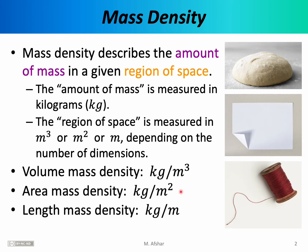So what this means is that there are really three different types of mass density. People sometimes forget to specify which type they're talking about, but if you look at the units they're using, you'll see what they mean. If you want to talk about the dough, you would talk about volume mass density, specified in kilograms per cubic meter. For a piece of paper, you talk about area mass density, specified in kilograms per square meter. For a string, you talk about length mass density, which is kilograms per meter of string.